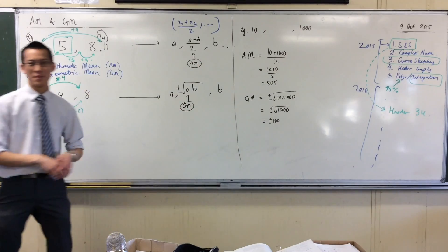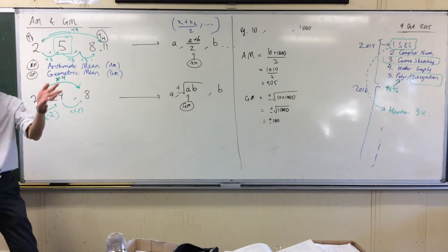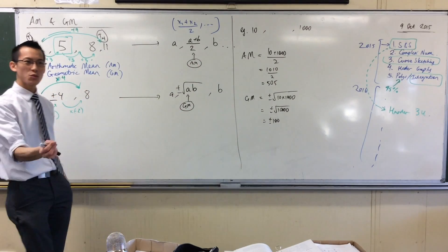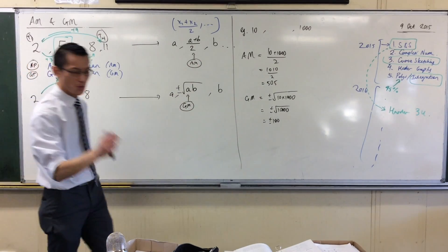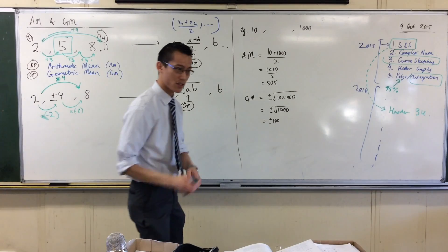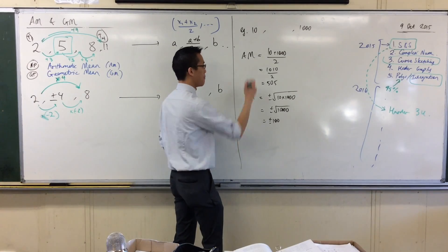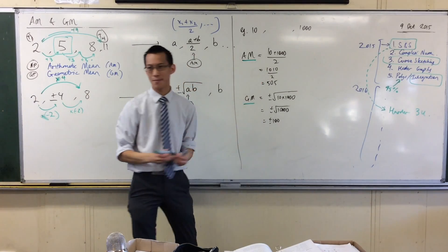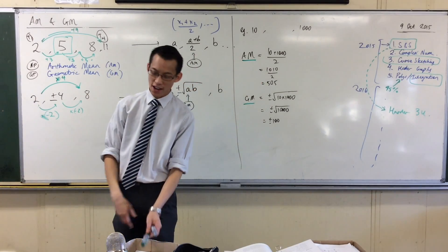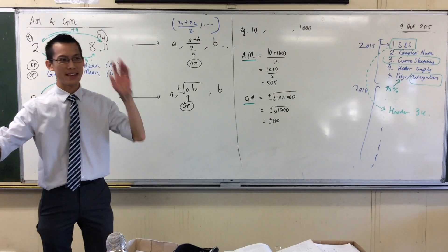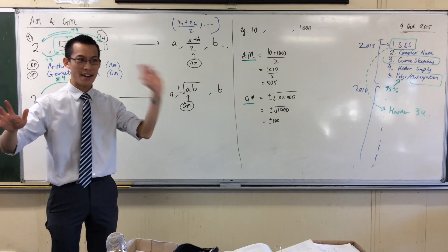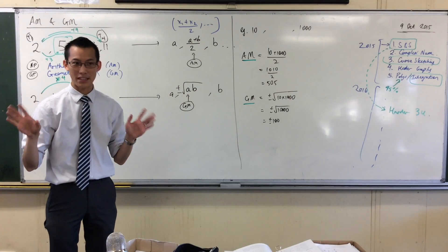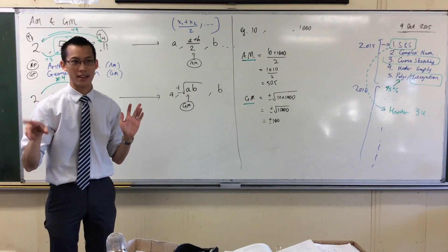You remember I said you can make them big, small, positive, negative. One thing you will notice: if what you want is not just one of them, but both an AM and a GM, you can't make one positive and the other negative. They can't be different signs.